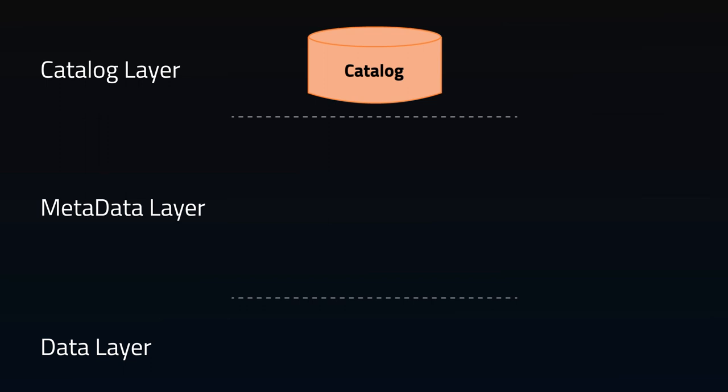There are three layers in the architecture of an Iceberg table. The first is the Iceberg catalog, which is the central place where you go to find the current location of the current metadata pointer. Within the catalog, there is a reference or pointer for each table to that table's current metadata file. For example, in the diagram, there are two metadata files, and the value for the table's current metadata pointer in the catalog is the location of the metadata file on the right.